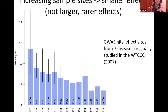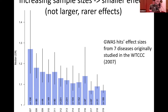This is illustrated by data from the GWAS Catalogue for seven diseases originally studied in the WTCCC. The median effect size in GWAS on these studies is going down over time.